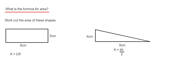The first shape we have is a rectangle and the formula for working out the area of a rectangle is A equals LW, which actually means area equals length times width.